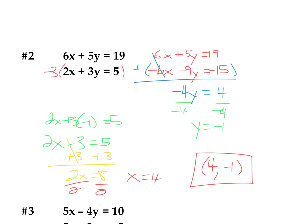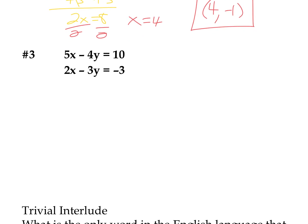We can multiply one or both equations. Here's an example of multiplying both equations to get something to eliminate. When we look at this system, we can't get the 5 and 2 to be the same coefficient by multiplying just one equation. But I could multiply both equations — multiply the first by 2 and the second by 5 to get 10 and 10, or get the y's to eliminate by multiplying by 3 and by 4. I'm going to get the y's to cancel out, so I'm going to multiply the first equation by 3 and the second one by negative 4, to get opposite signs so I can add them to cancel.